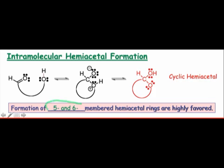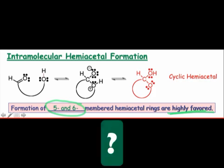When the ring formed possesses five or six atoms, equilibrium heavily favors the cyclic hemiacetal form. Take a moment to consider why we should expect five- and six-membered cyclic hemiacetals to be more favorable than their corresponding open forms.